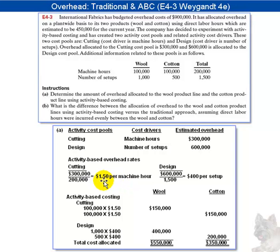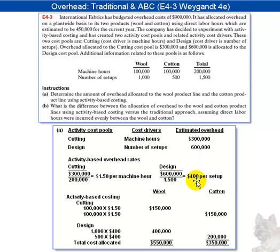Using the same procedure for the design cost pool, we take the total $600,000 in cost divided by 1,500, the number of setups, and we come up with $400 per setup.